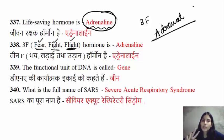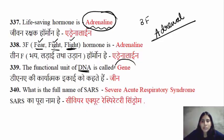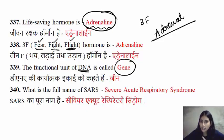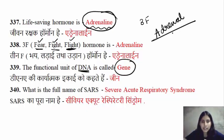The two hormones released from the adrenal gland are cortisol and adrenaline. One gene is responsible for any one character.